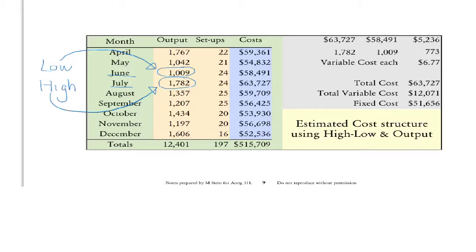Once we've chosen the high and the low, we can estimate the variable cost — in this case $6.77. Once we have the variable cost, we can then estimate the fixed cost, which is $51,656. Once we have estimates of variable costs per unit and fixed costs, we can make predictions about future costs based on these parameters.